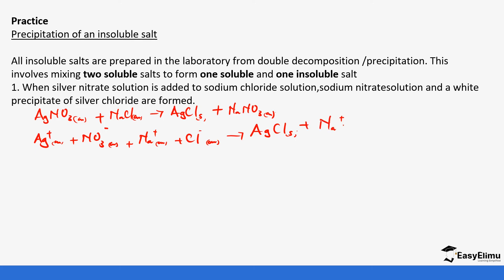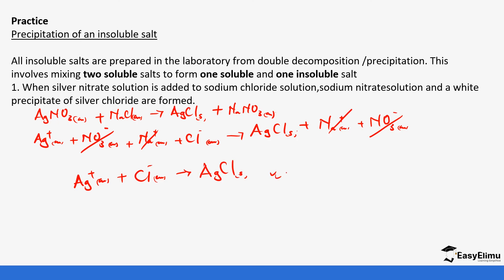Then we separate sodium nitrate into sodium ions and nitrate ions. The next step is to cancel the ions that occur in aqueous state on both sides. Silver is aqueous in the reactants but solid in the products, so we do not cancel it. Nitrate ions are aqueous in both reactants and products, so we cancel those out. Sodium ions are aqueous on both sides, so we cancel those out. Chloride ions are aqueous in the reactants but solid in the products, so we do not cancel those.